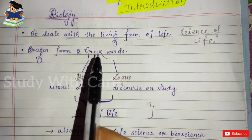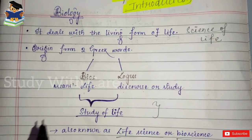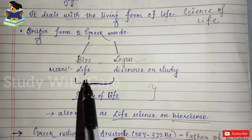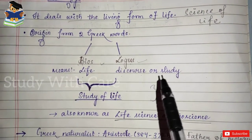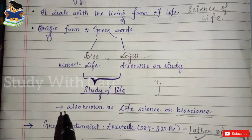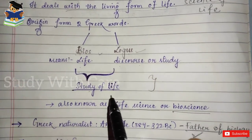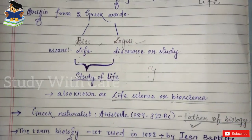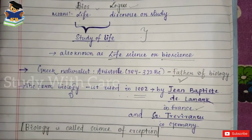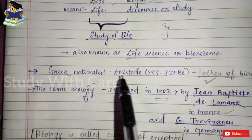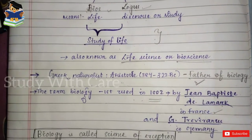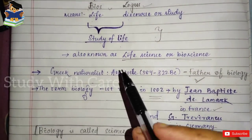Biology originates from two Greek words: bios and logos. Bios means life and logos means discourse or study. Combining both, biology is the study of life. It is also known as life science or bioscience.